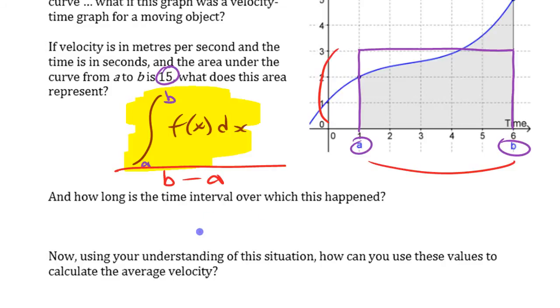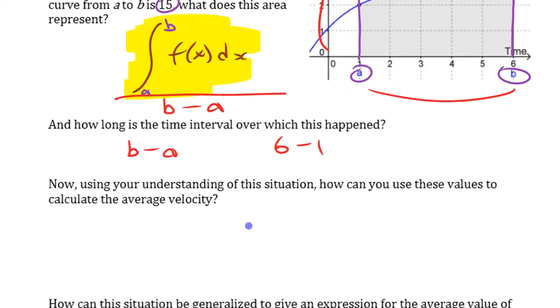Okay? The interval that this happened was B minus A or 6 minus 1. It's 5 in that case, right? The average there is 15 divided by 3. It's 5, right? Or in other words, it's integral from 1 to 6 of F of X dx.